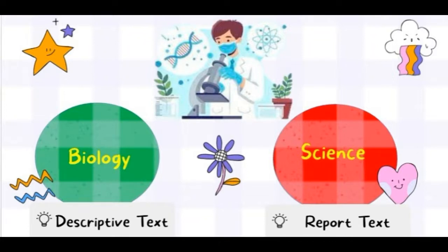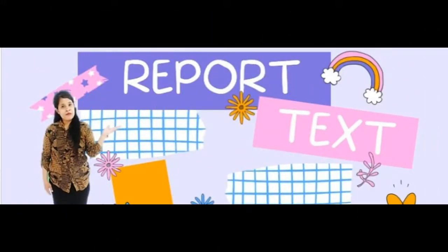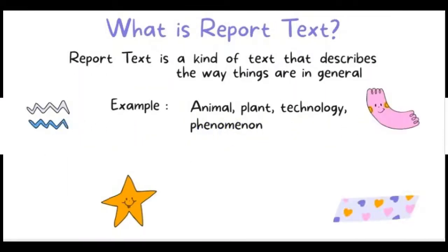Science is general because there are several subjects under science, so it is more general. Biology is a specific subject. So right now we are focused on something in general — a kind of text that talks about things in general. The definition: report text is a kind of text that describes something in general. Examples include animals, plants, technology, and phenomena.